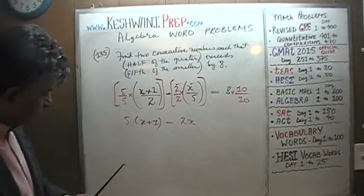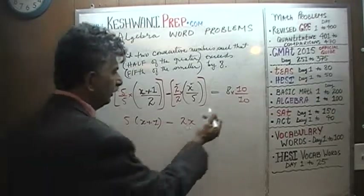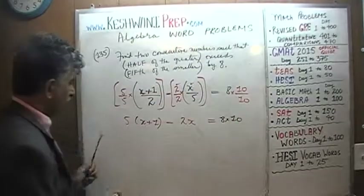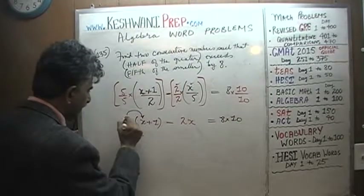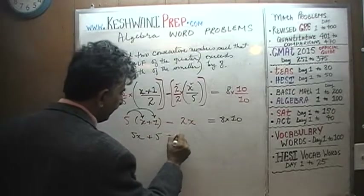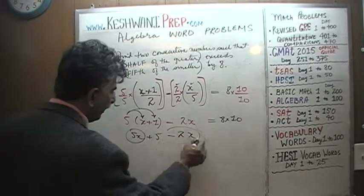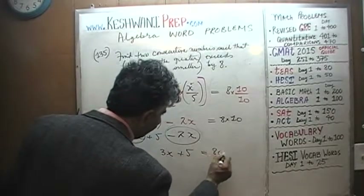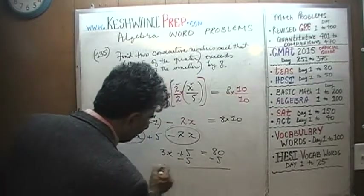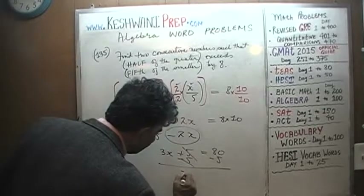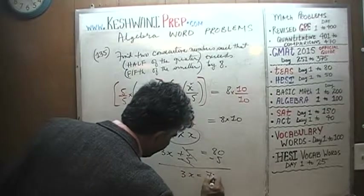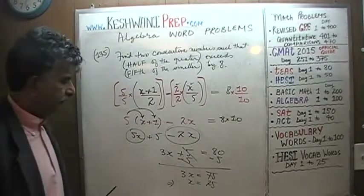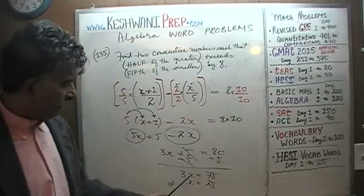And that has to equal eight times ten, which is eighty. Open the parenthesis: five times x is five x, five times one is five. And then we have minus two x. Five x and then negative two x gives us three x, plus five equals eighty. Subtract the five from both sides — five is going to go away — and that gives us three x equals seventy-five. And that in turn implies that x must be twenty-five, because three times twenty-five is seventy-five.